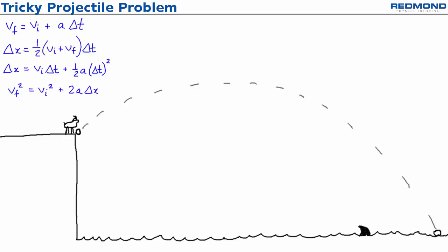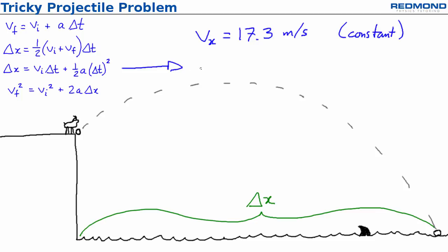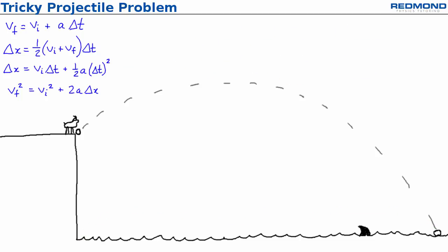For the second part of the problem, Billy needs to find the horizontal displacement, delta x. Vx is constant at 17.3 meters per second, so using the third equation seems helpful, especially since ax is zero. Billy needs delta t before he can use this equation, and he can only get delta t from the vertical motion.